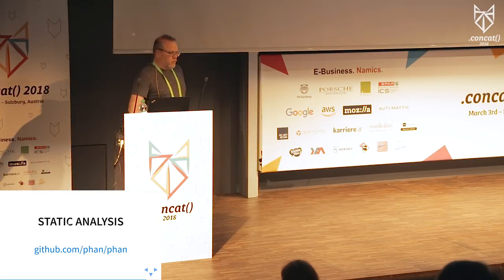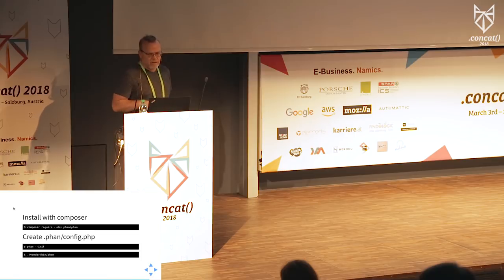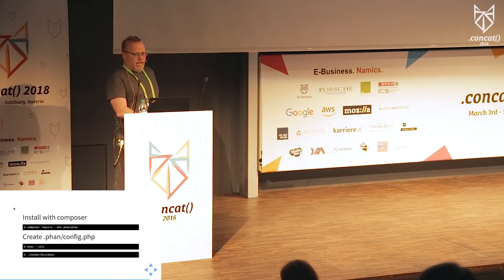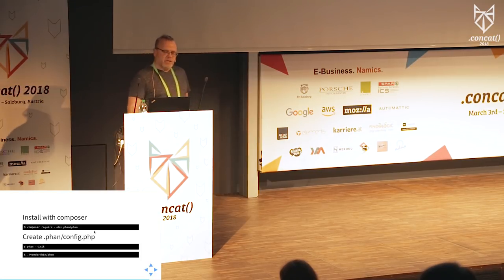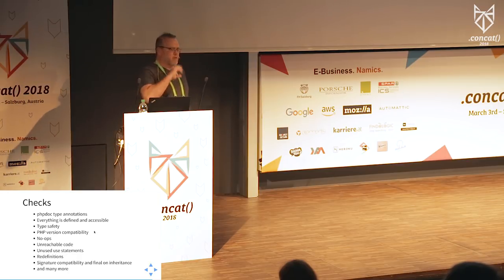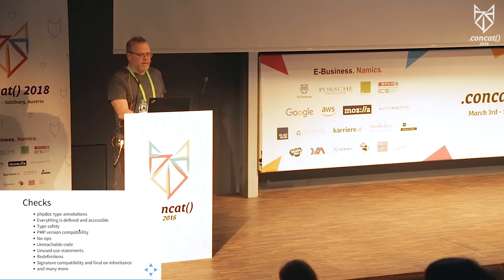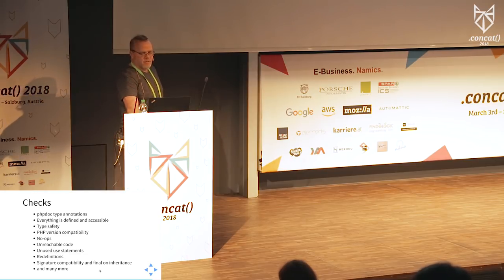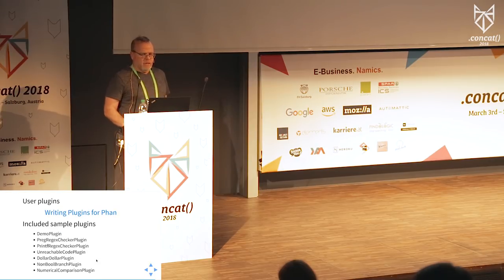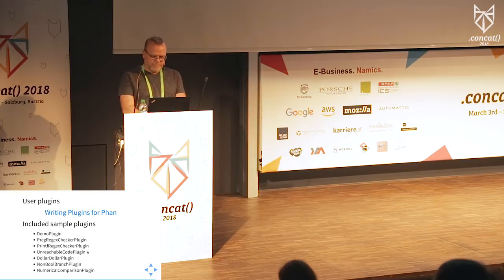That's where static analysis comes in. I wrote a static analysis tool called Phan — you can find it at github.com/phan. Very easy to install via Composer or by cloning from GitHub. You initialize it with '--init', which creates a '.phan/config.php', then run 'vendor/bin/phan' on your project. It checks all kinds of things: PHP doctype annotations, whether all methods are defined, any constant or property you try to access is defined and at the right access level, type safety everywhere, version compatibility, no-ops, unreachable code, unused statements.